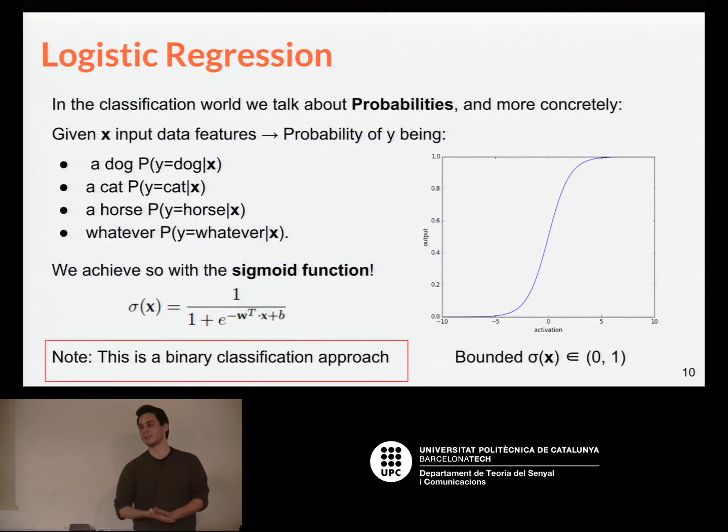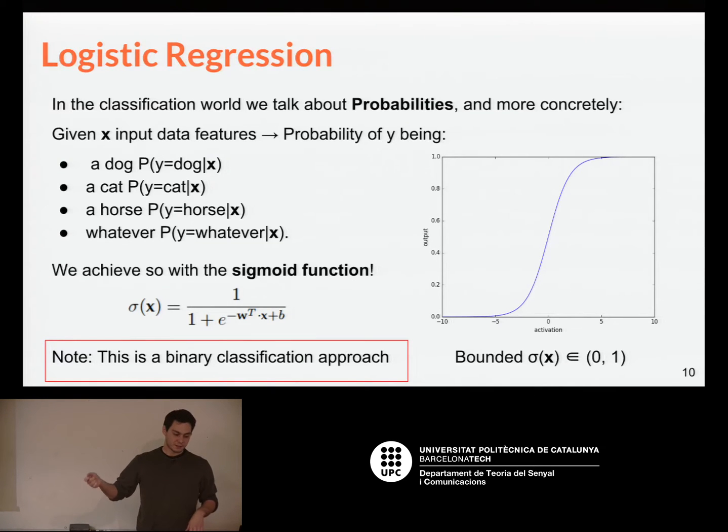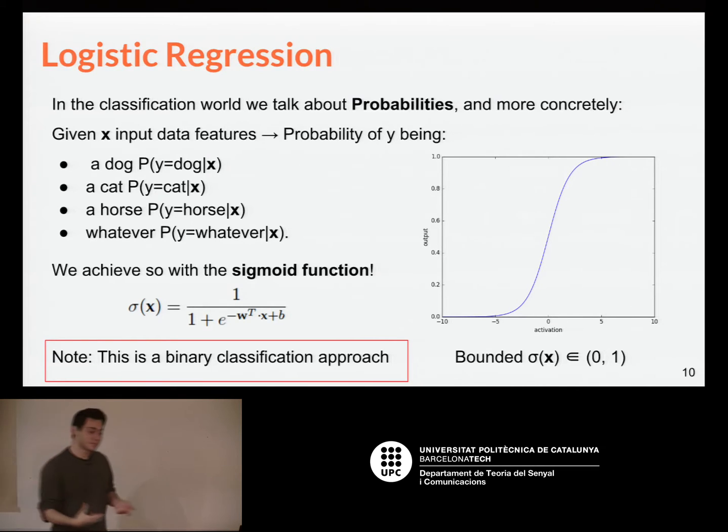So, now, moving on. What logistic regression means is transforming this approximation of a function somehow to predict probabilities. So, we have binary classification task, and what we want the system to tell us is whether we have maybe a dog or a cat or whatever with a certain probability out of a set of inputs. So, this image corresponds to a dog, or this speech piece of signal corresponds to the word hello. This can be given in a binary fashion by this sigmoid function.